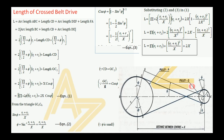After simplification, the 2x terms and cancellations give: L = π(r1 + r2) + 2x + (r1 + r2)²/x. This is the length of the cross belt drive expressed in terms of the radius of the driving pulley, the radius of the driven pulley, and the center distance between the two pulleys.